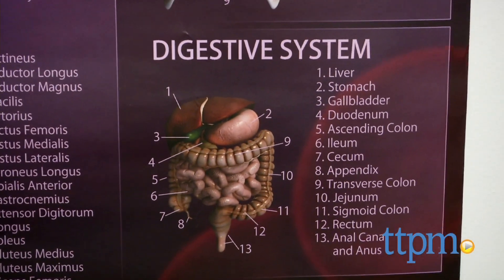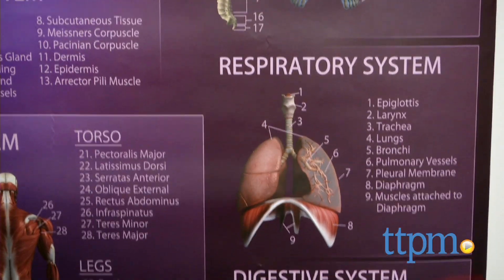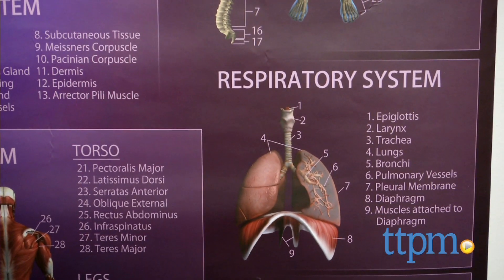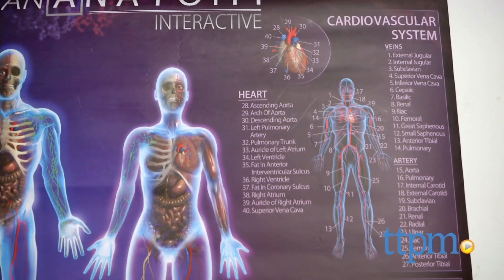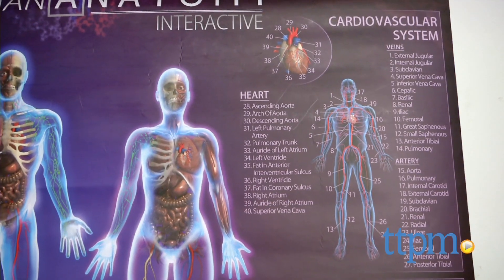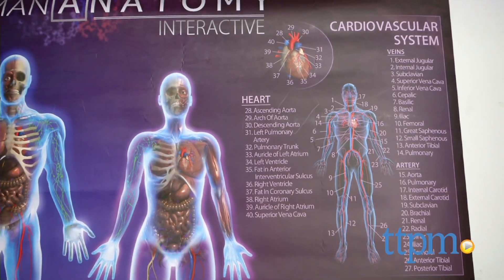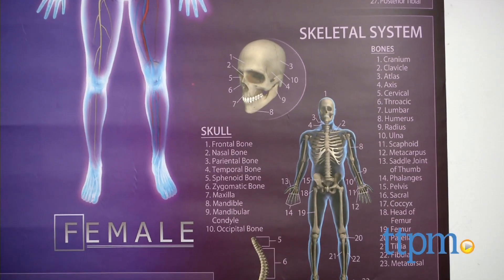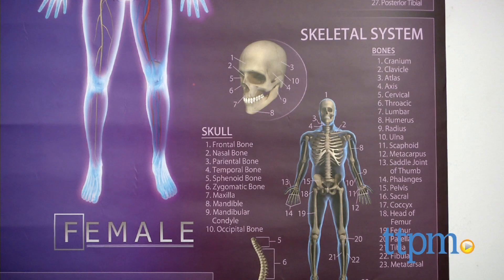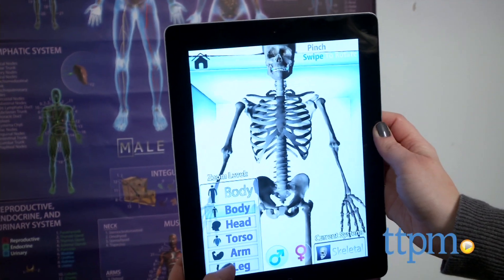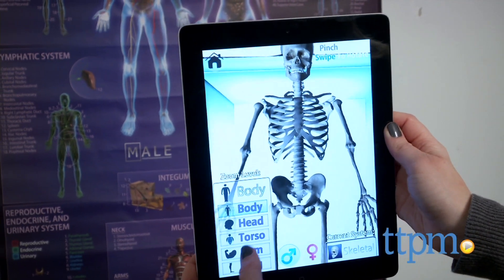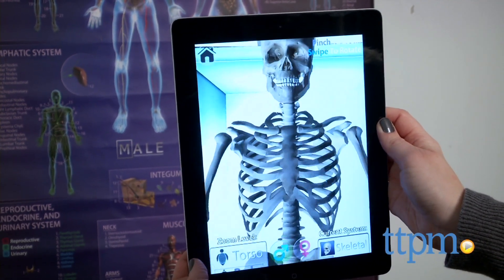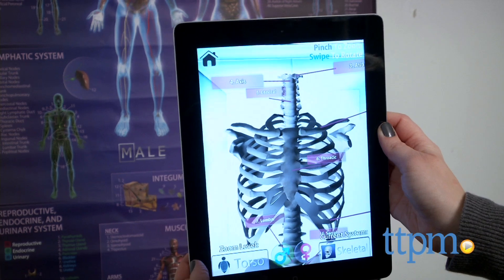There are 3 ways to interact with the poster using the free app. In augmented reality mode, hover your device over the chart to unlock the digital content and see a 3D human body pop off the chart. Explore each of the different body systems on their own, tapping on different body parts to learn more about them.